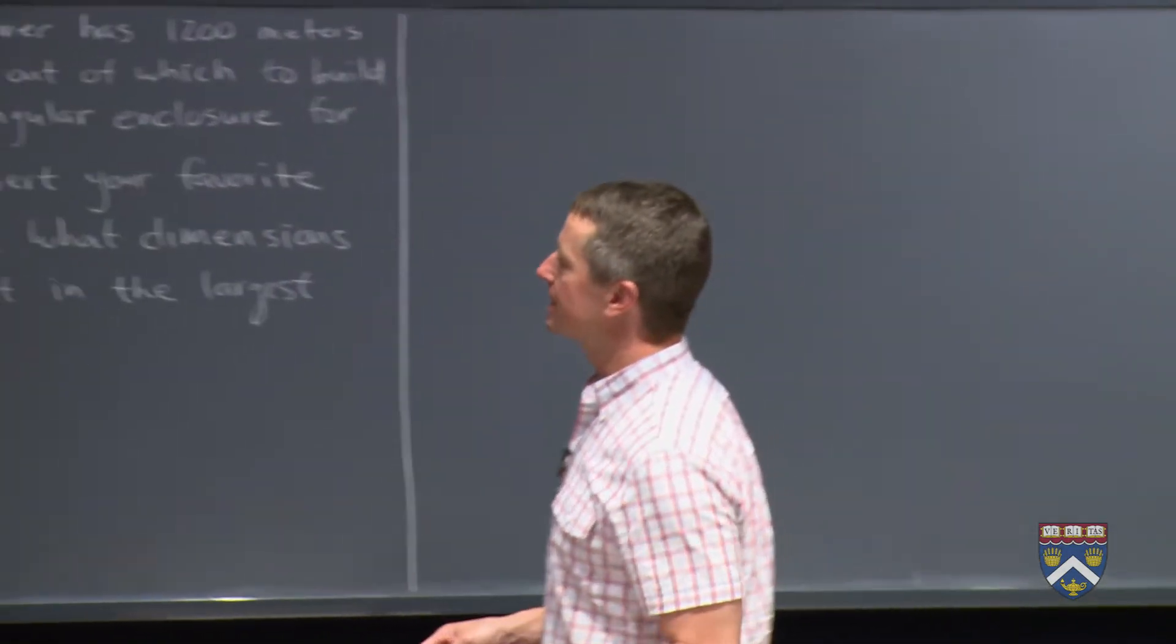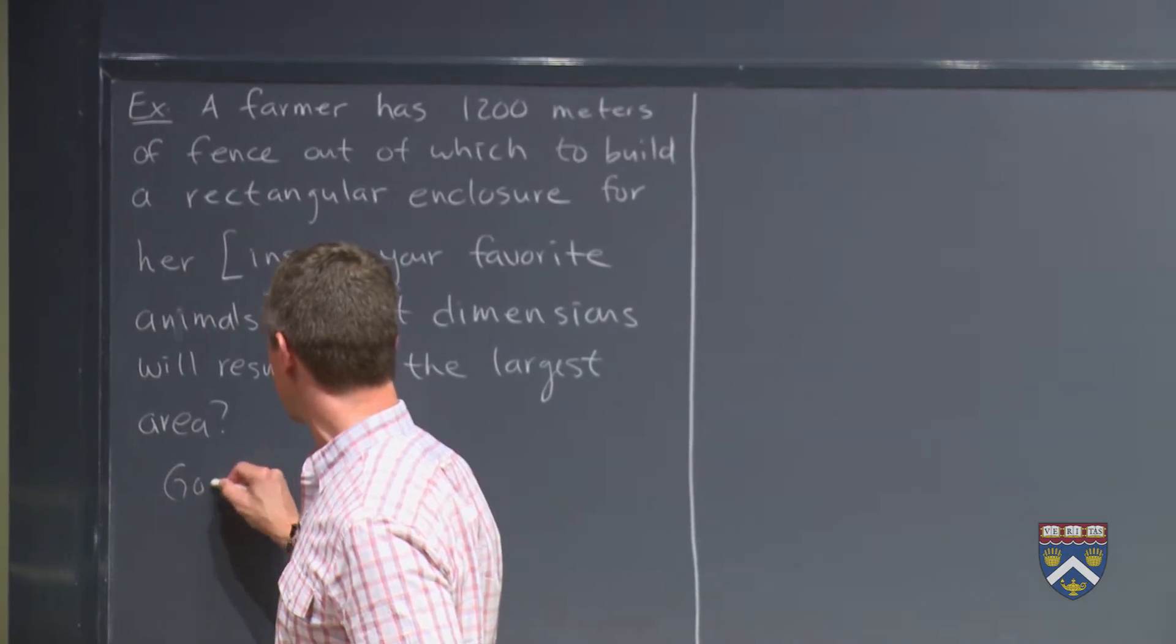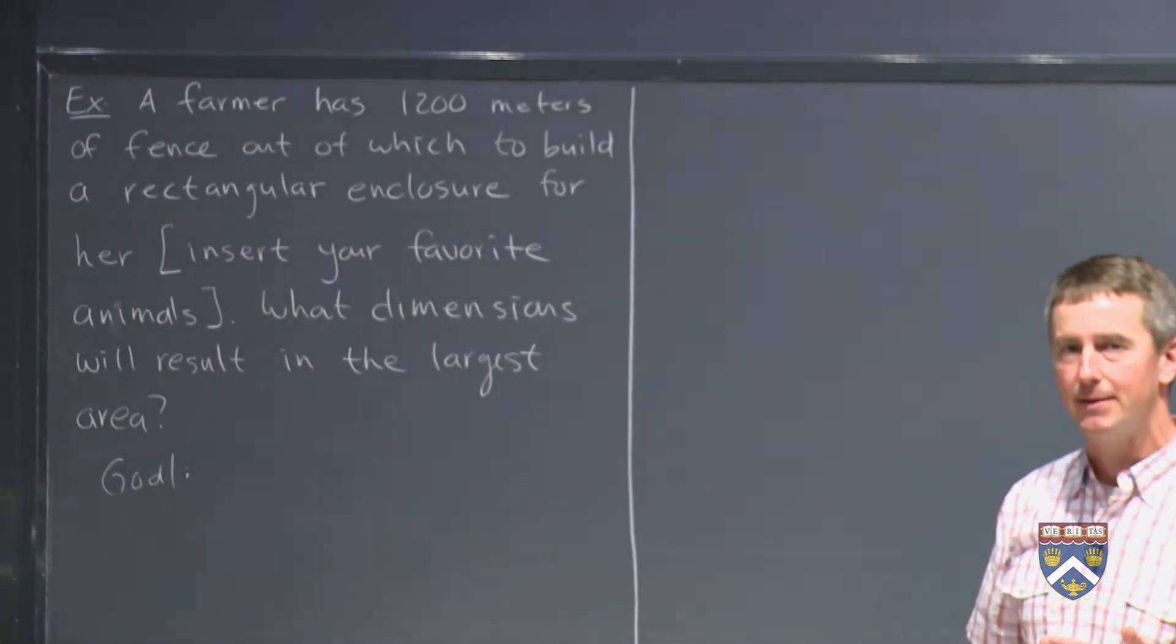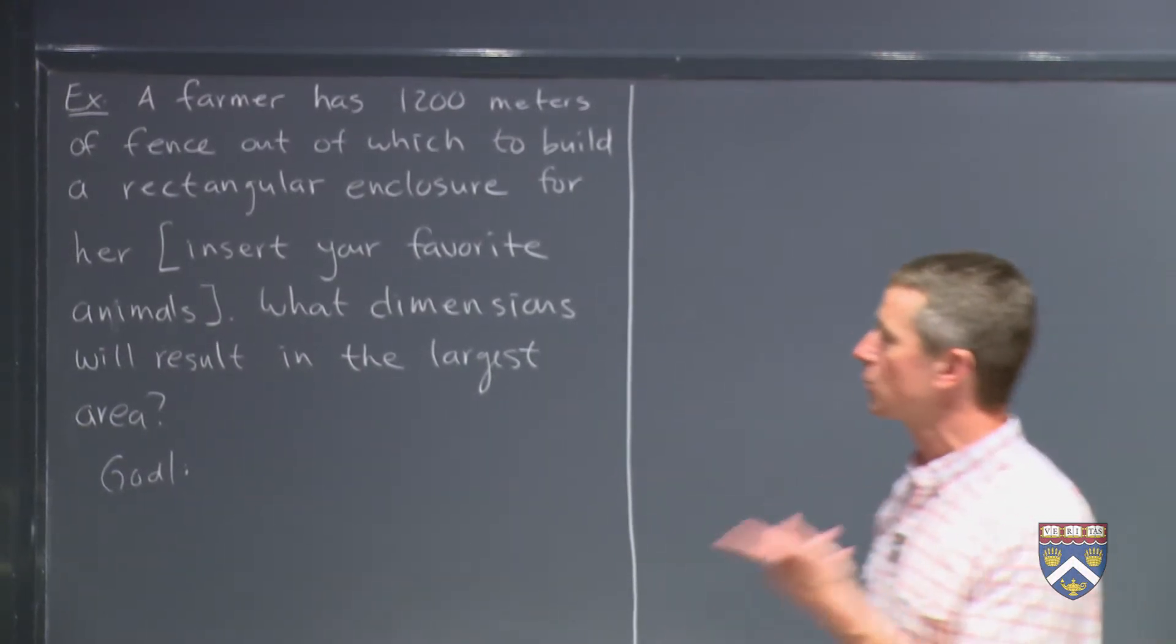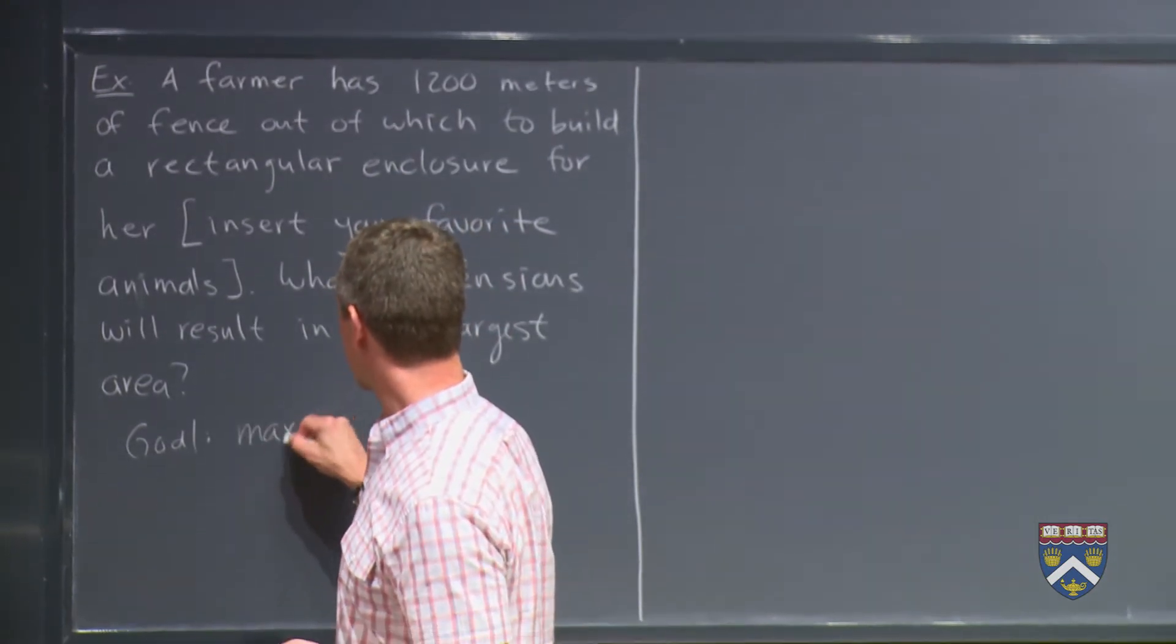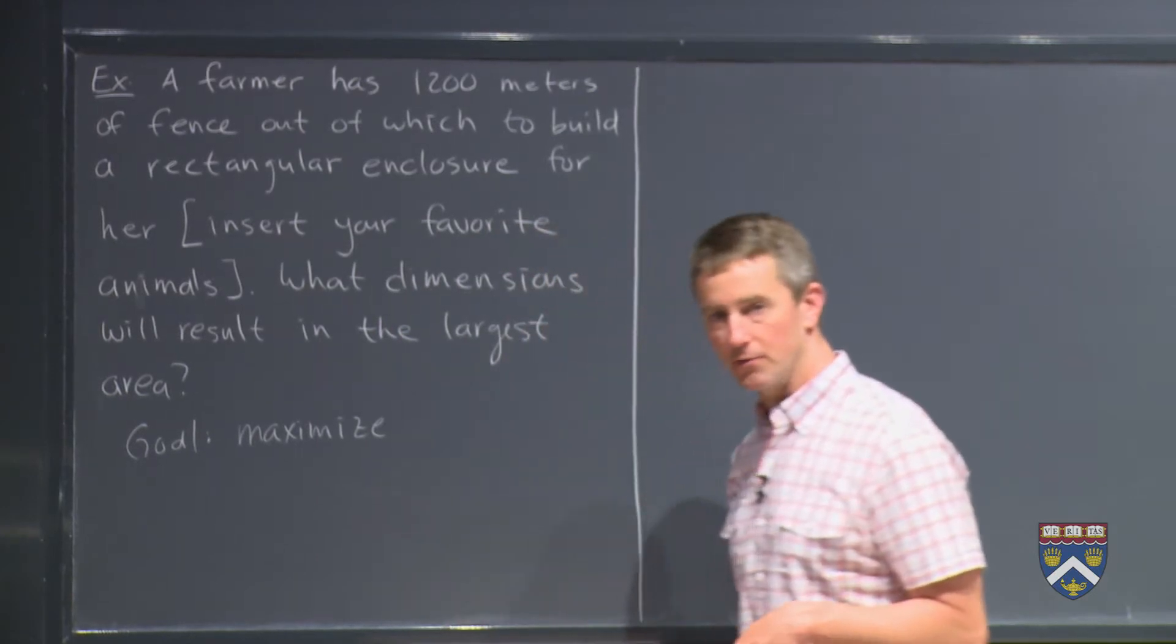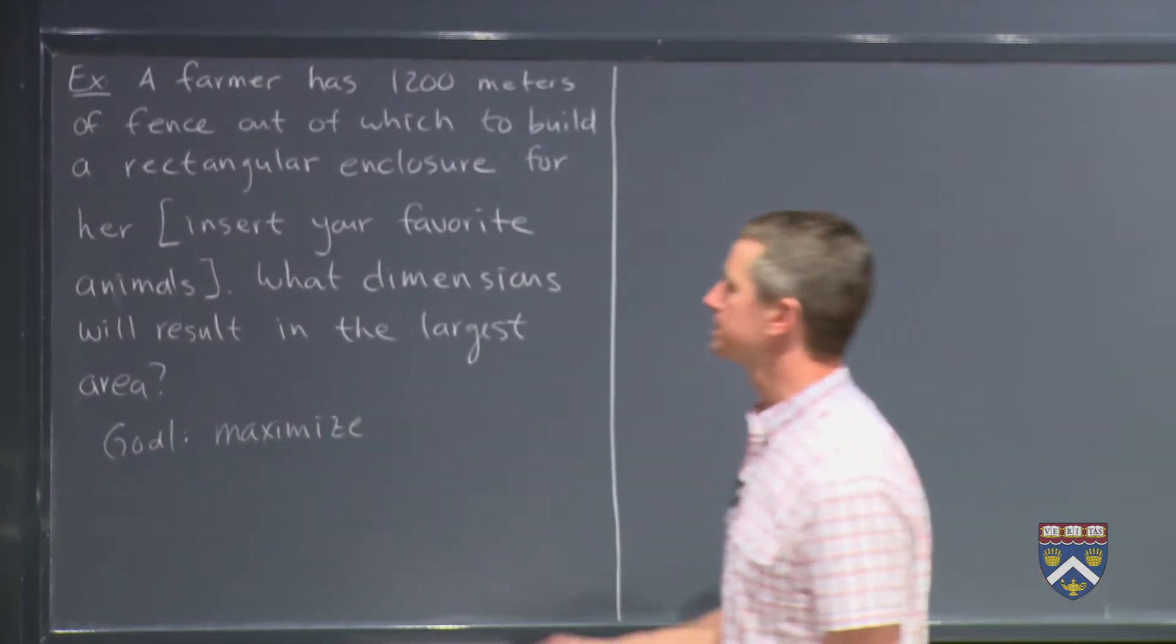So I like to start off these by making it clear what our goal is because especially as we get into some of the more complicated ones, there can be a lot of different things flying around in the problem and you can get confused later on about what your goal was. In this case, our goal is always going to be to maximize or minimize something. We're going to use our techniques that we found earlier for finding extrema in these very applied problems. In this case, our goal is to maximize the area.